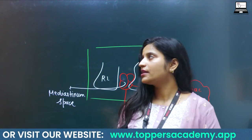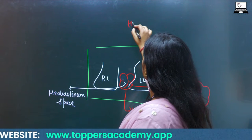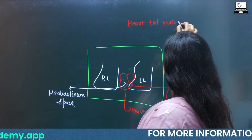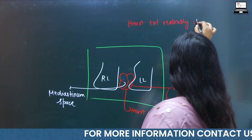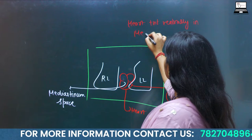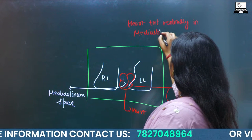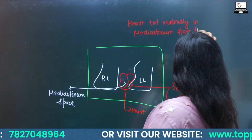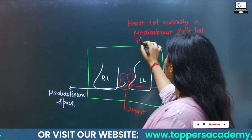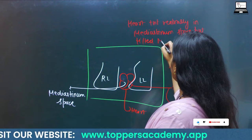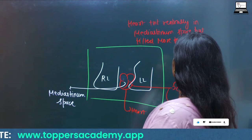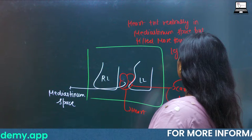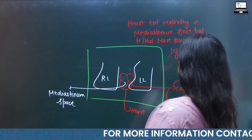So the heart is present ventrally in the mediastinum space, but tilted more towards the left side.